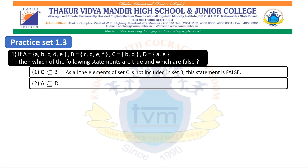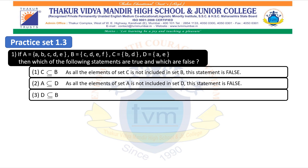Second statement: A is a subset of D. It means all the elements of A should be included in D. All the elements of A are not included in D. As all the elements of set A are not included in set D, this statement is false. Third statement: D is a subset of B. It means all the elements of D should be included in B. The elements of D are not included in B. As all the elements of D are not included in set B, this statement is false.